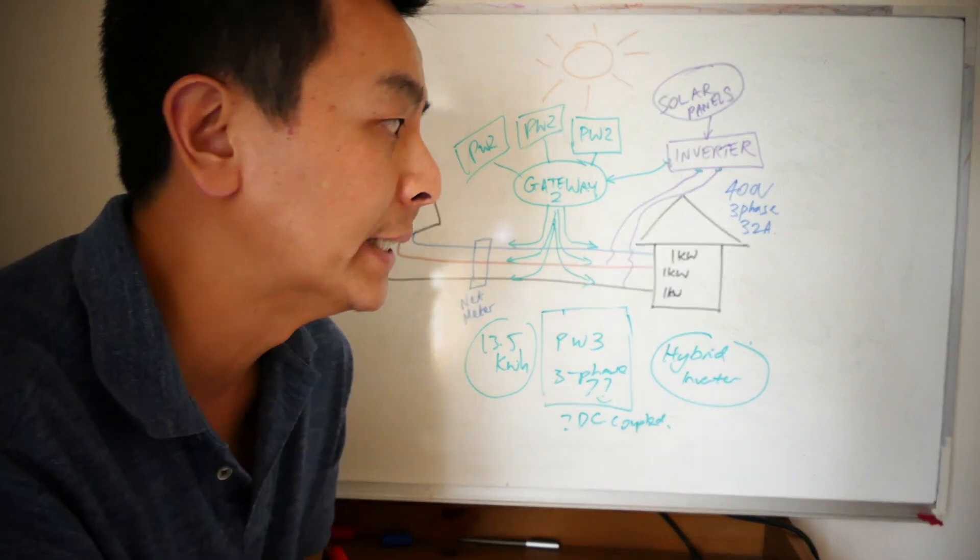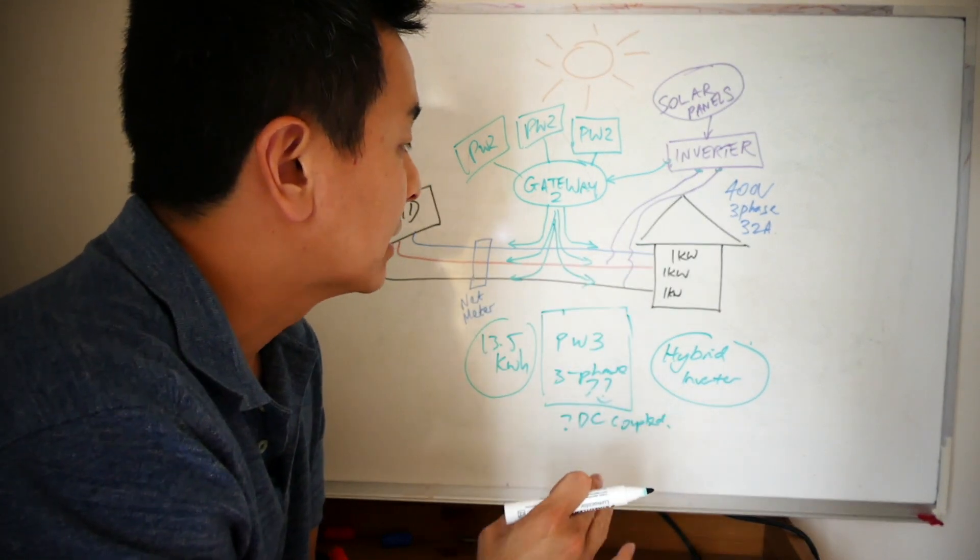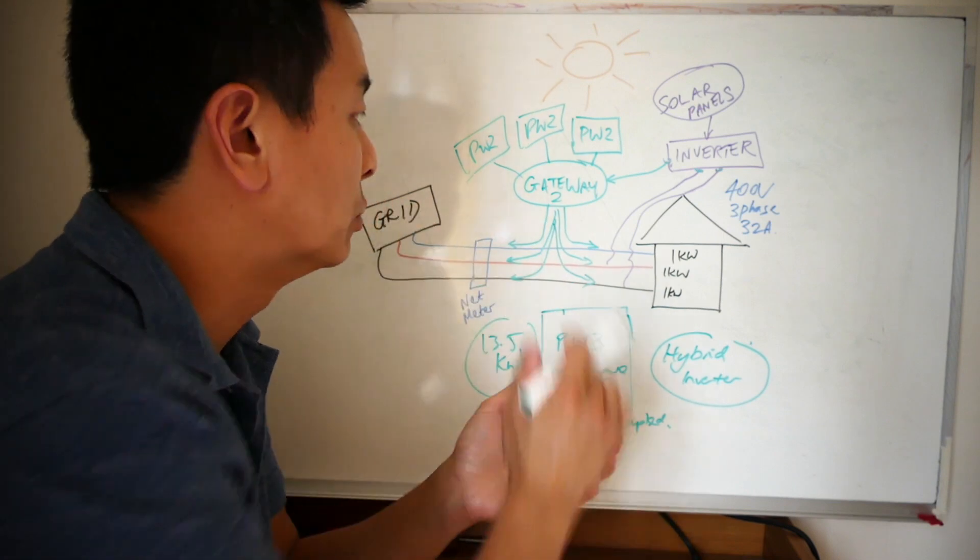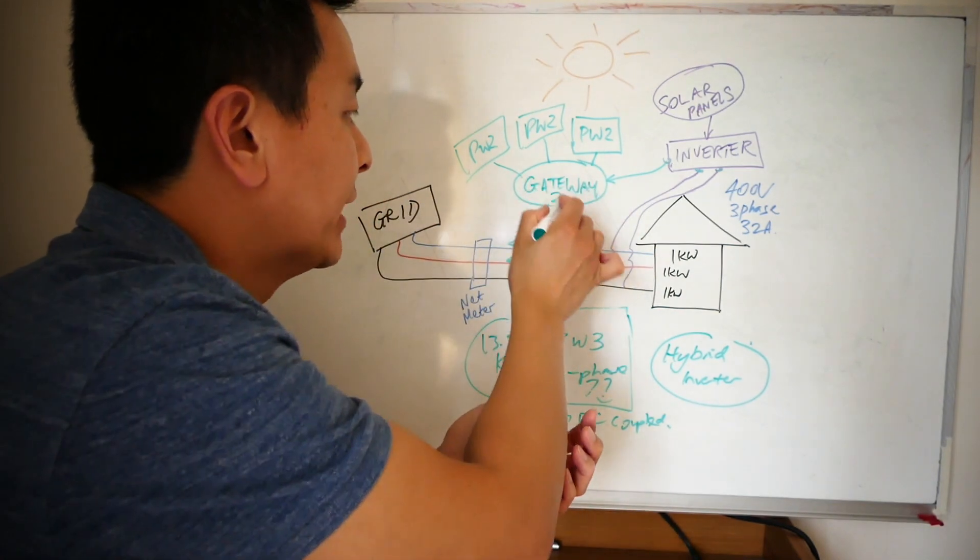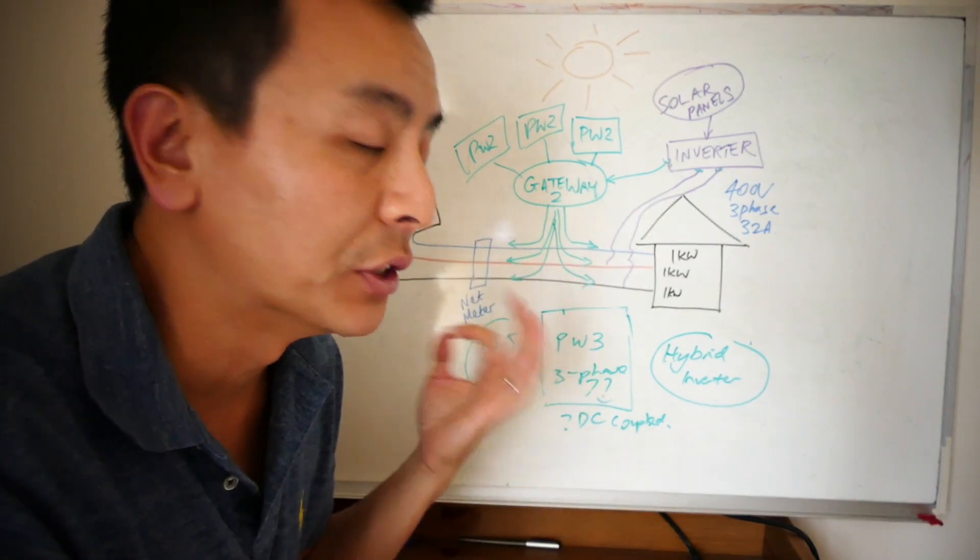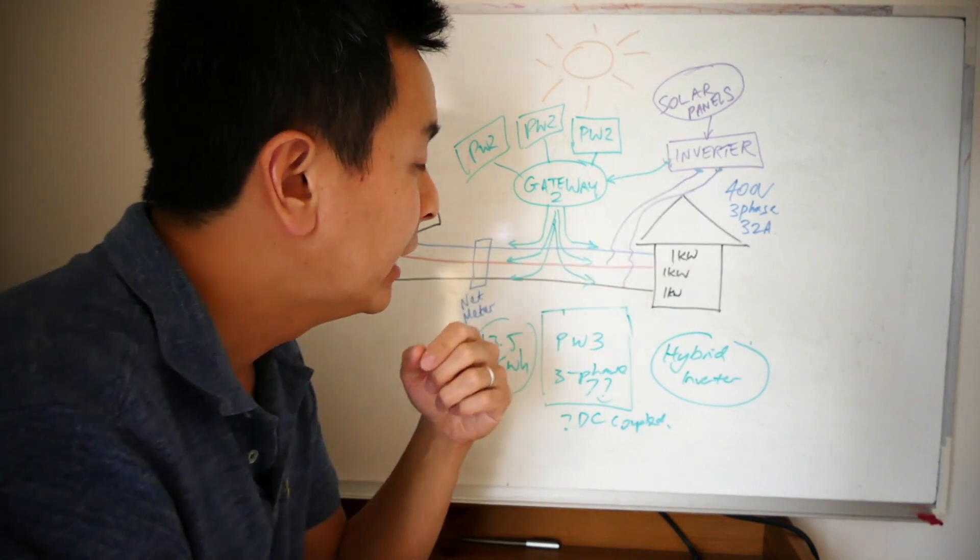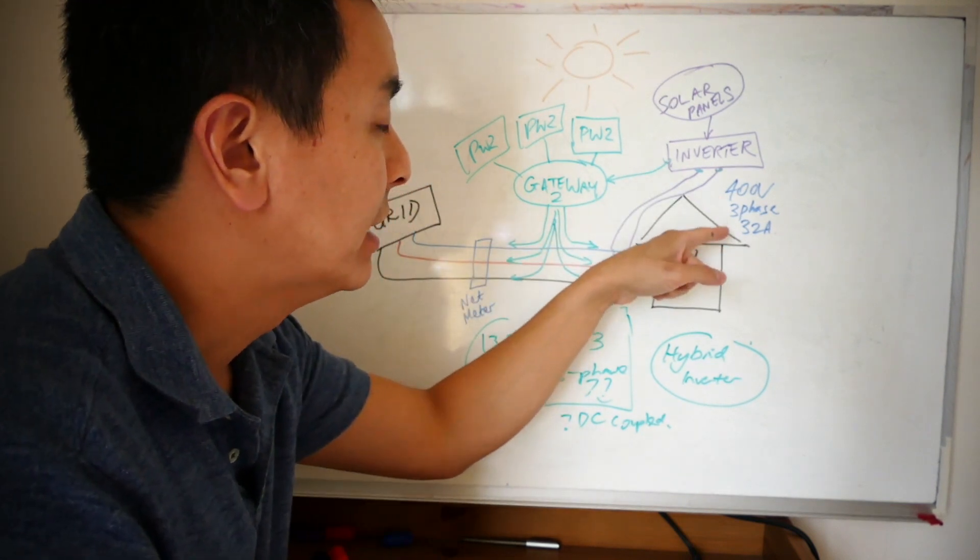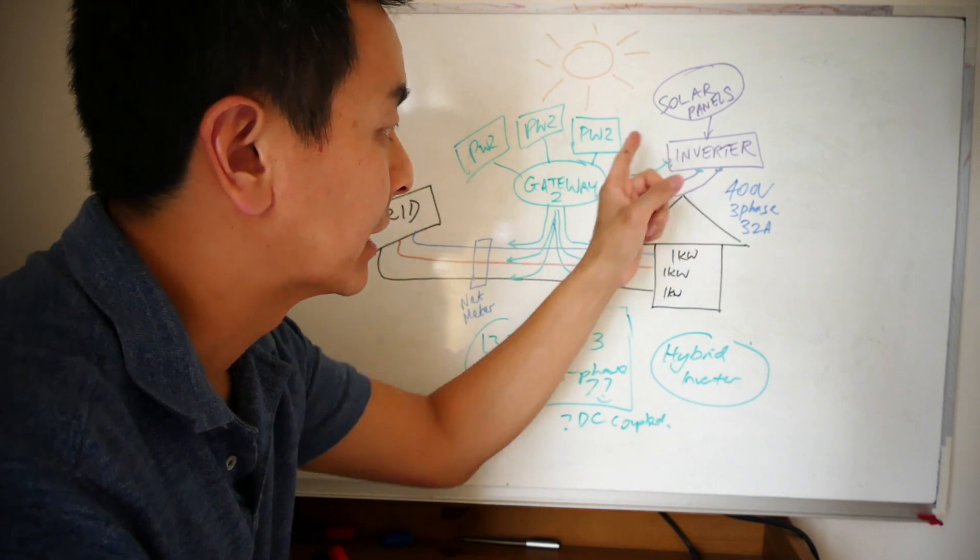Anyway, so I hope that makes sense. It's impossible for Powerwalls on each phase, even if you're using a Gateway 2 which is three-phase compatible, to power a 400 volt three-phase supply device like a solar inverter.